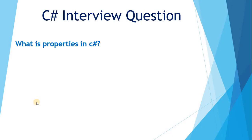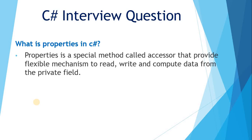Hello friends, today we have the topic of properties. What are properties in C#? Properties is a special method called accessor that provides a flexible mechanism to read, write, and compute data from a private field. So from the private field we can read, write, and compute data with the help of a property.